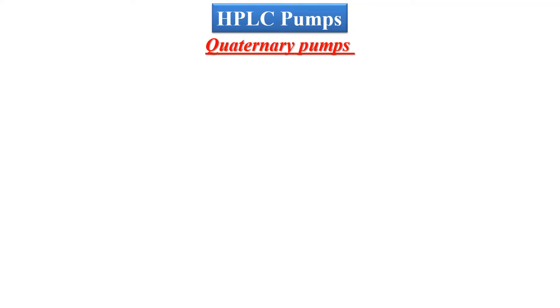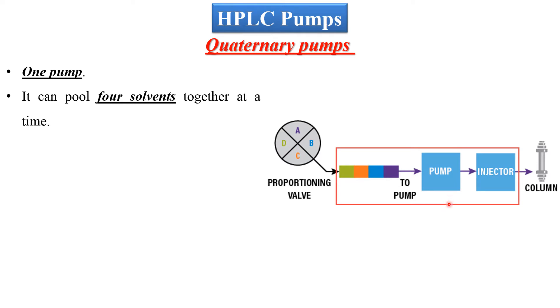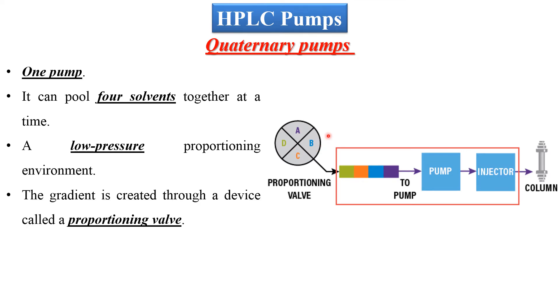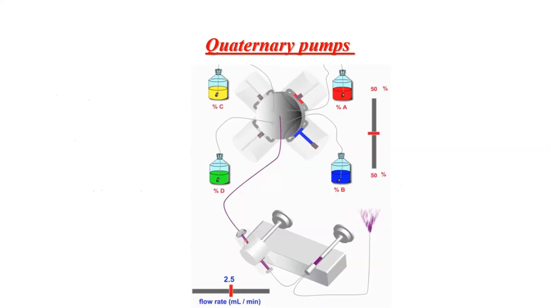The second type of HPLC pump is the quaternary pump. This is a sample design: as we can see, there is only one pump unit and it can deliver up to four solvents at a time. It can be considered a low pressure environment, and the proportionating valve will control the ratio of the solvents to be delivered into the column. The solvents are mixed in the mixing chamber before reaching the column.